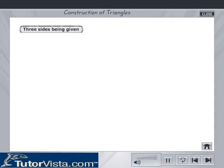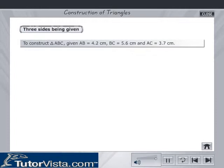To construct a triangle given three sides. We are required to construct triangle ABC given AB is equal to 4.2 cm, BC is equal to 5.6 cm and AC is equal to 3.7 cm. Proceed as follows.